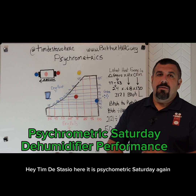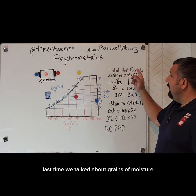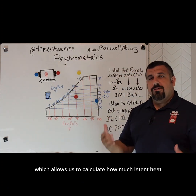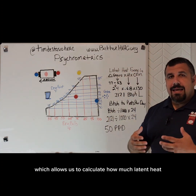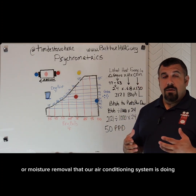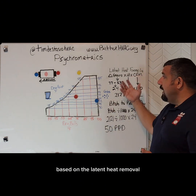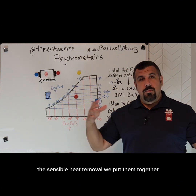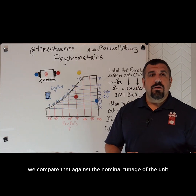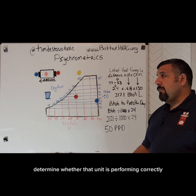Hey, Tim DeStasio here. It is Psychometric Saturday again. Last time we talked about grains of moisture and the latent heat formula, which allows us to calculate how much latent heat or moisture removal our air conditioning system is doing. We can tell a lot about how a system performs based on the latent heat removal and the sensible heat removal. We put them together — that's total heat — and compare that against the nominal tonnage of the unit to determine whether it is performing correctly.